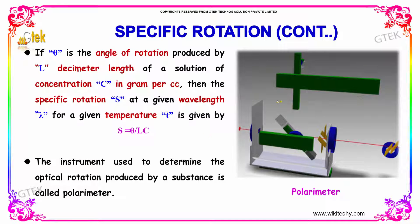The instrument used to determine the optical rotation produced by a substance is called a polarimeter.